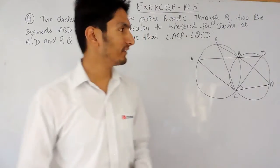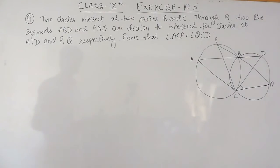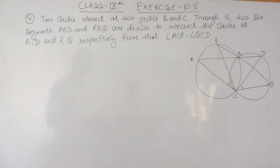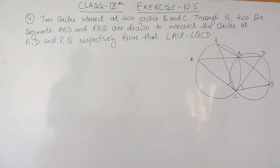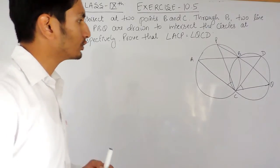Hello everyone. In this video we are going to solve question number 9 of exercise 10.5. The question says: two circles intersect at two points B and C. Through B, two line segments ABD and PBQ are drawn to intersect the circles at A, D and P, Q respectively. You have to prove that angle ACP is equal to angle QCD.